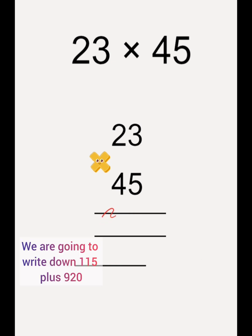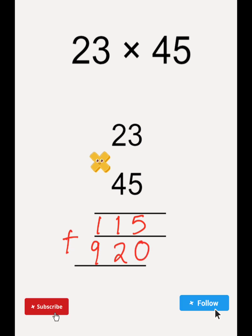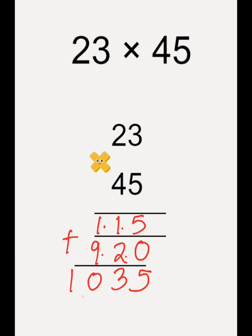We are going to write down 115 plus 920. 5 plus 0 is 5, 2 plus 1 is 3, 9 plus 1 is 10. So it is a 4 digit number. What is the number? 1035.